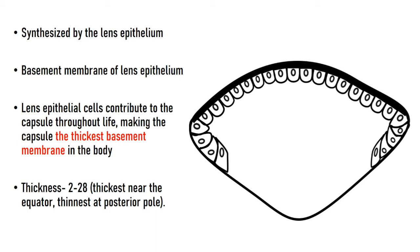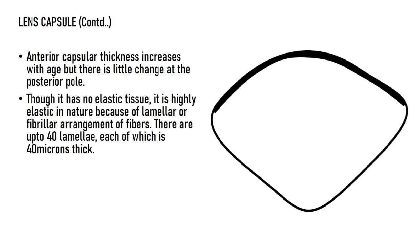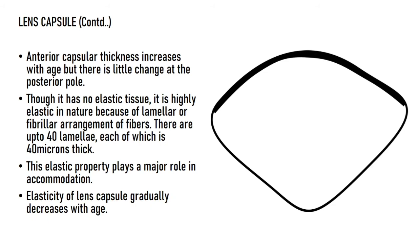The capsule is thickest at the equator and thinnest at the posterior pole. The thickness of its anterior part increases with age, while there is little change at the posterior pole. Although the lens capsule has no elastic tissue, it is highly elastic due to the arrangement of its collagen fibers in lamellae — up to 40 lamellae, each approximately 40 nanometers thick. This elasticity plays a major role in accommodation and gradually decreases with age, leading to difficulty in accommodation.